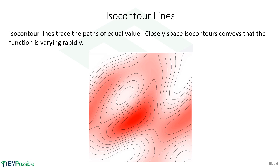Involved in this is the concept of isocontour lines. Here we're looking at a two-dimensional scalar function — a single number associated with each point. If we think of this as elevation, where bright areas are high elevation and white areas are low elevation, these isocontour lines are lines of equal elevation. If you walk along one of these lines, you would not be going up or down. Going against the lines means going straight uphill or downhill.